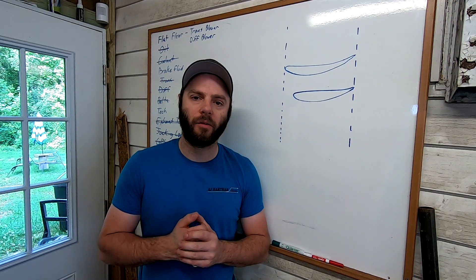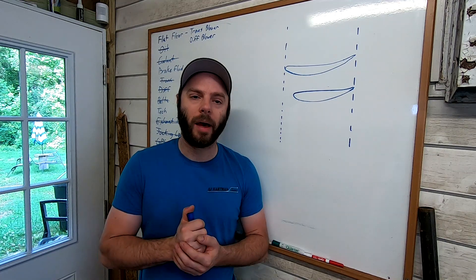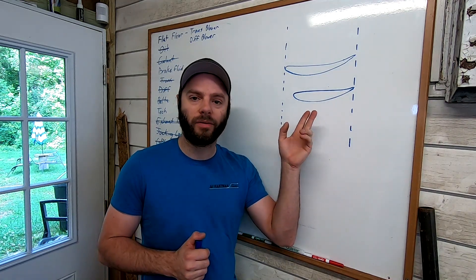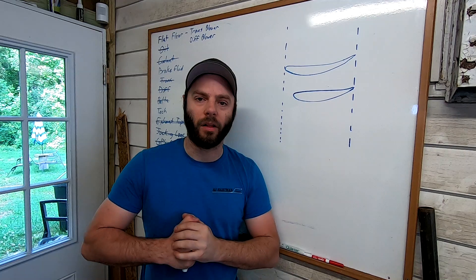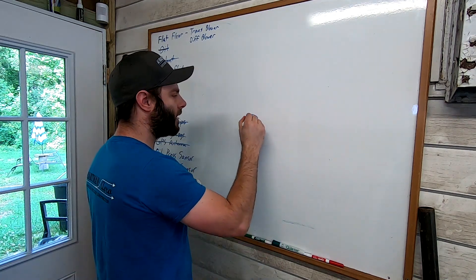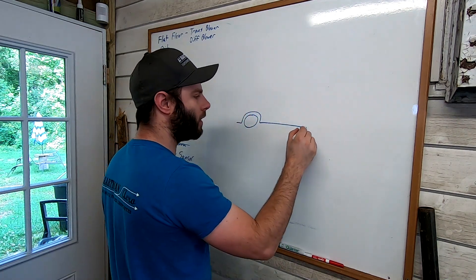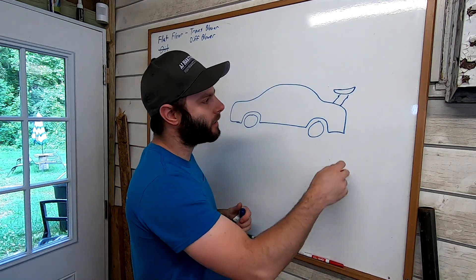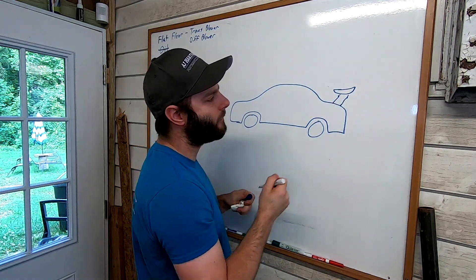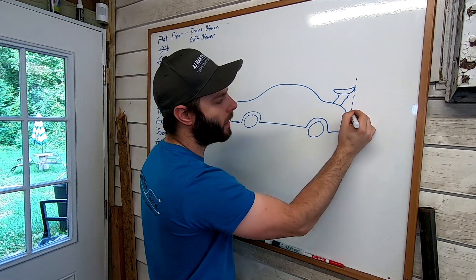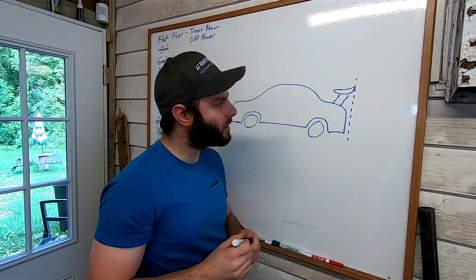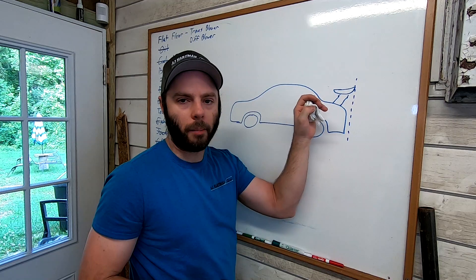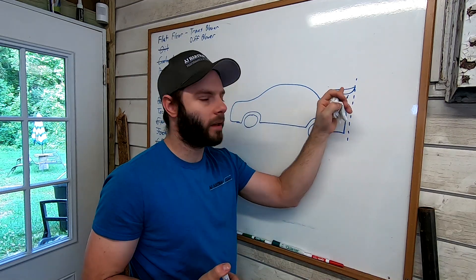Welcome back to the channel. Today's video is going to be all about wing setback — the simple math to figure it out and the advantages of it all. Wing setback is the reference line of how far back your wing is. Most road racing classes have some sort of rule about how far rearward your wing can go.